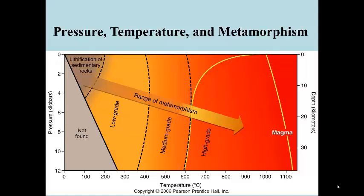So metamorphism occurs at the temperatures and pressures between lithification on the left-hand side and the magma line on the right. At temperatures and pressures between there, the rocks undergo change. And that's what we're going to talk about for the rest of this lecture and the results, the rocks that result from that process.